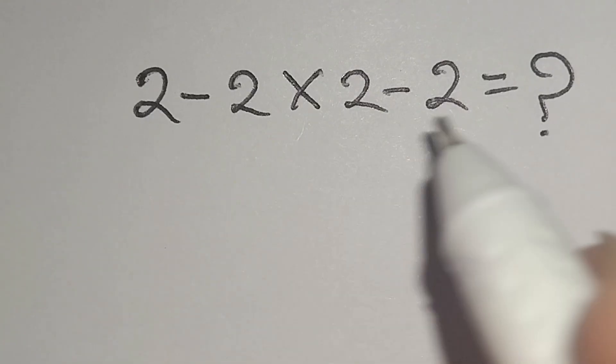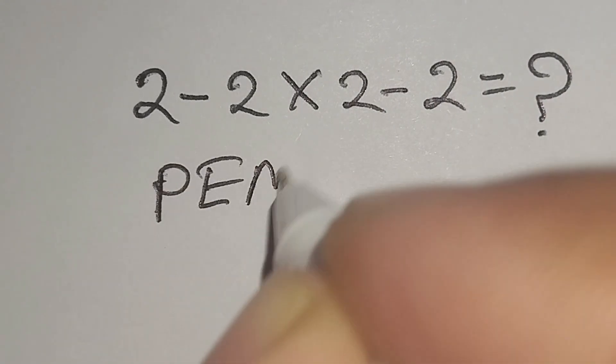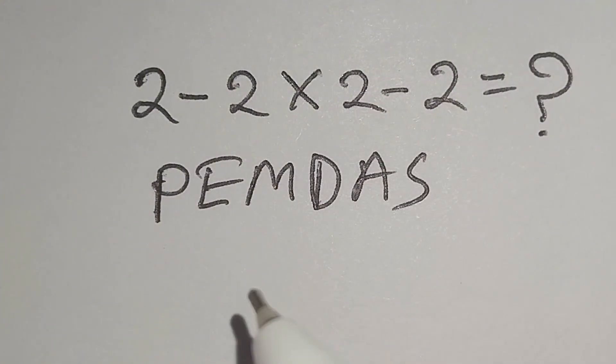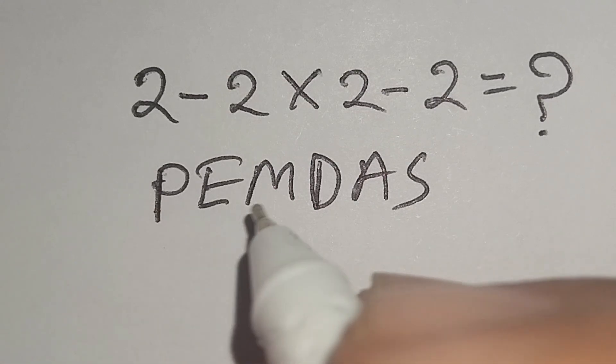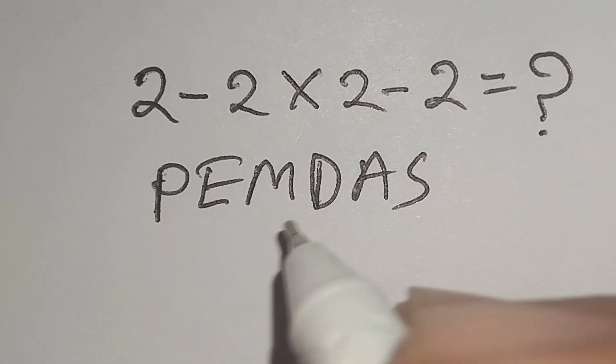Now I will apply PEMDAS rule to solve this math correctly. Here, P-E-M-D-A-S. According to PEMDAS rule, at first we have to work with parenthesis, then exponent, then multiplication or division, then addition or subtraction. Remember,